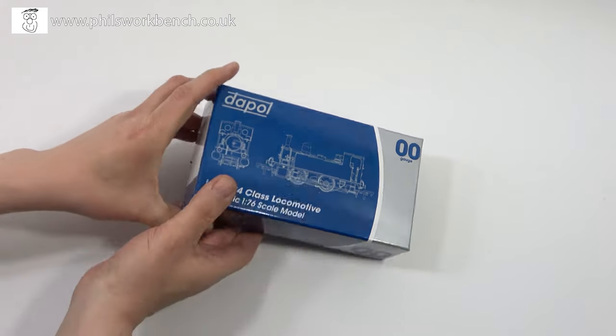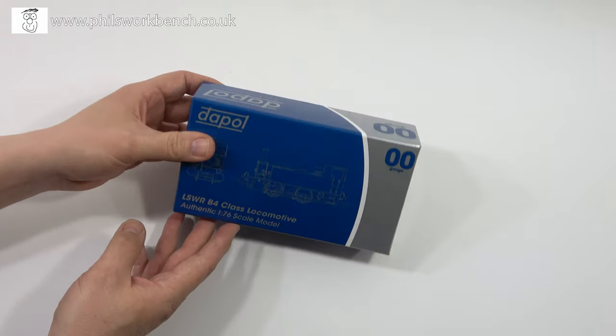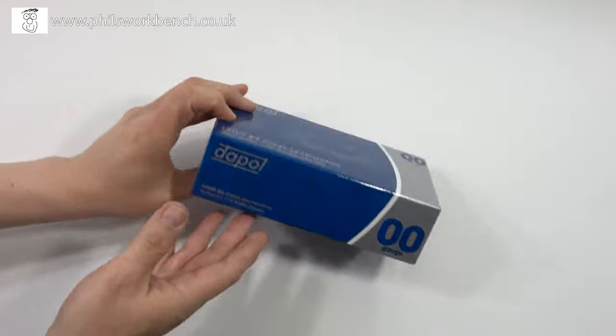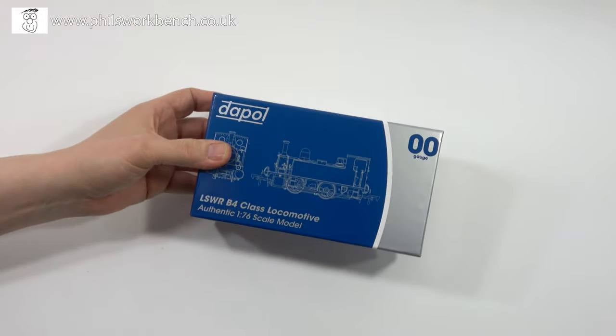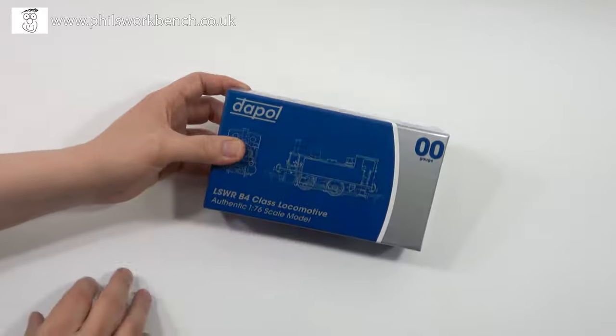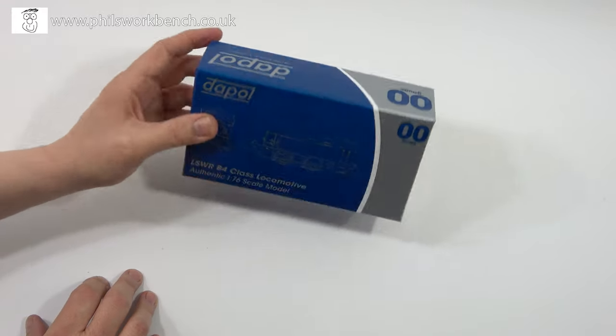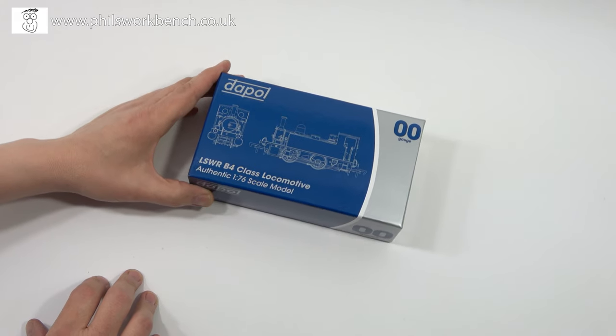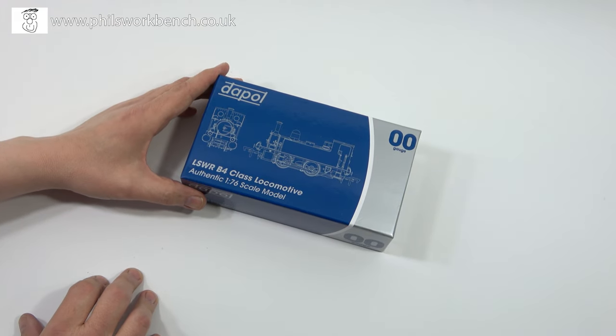Now, the B4 Tank Loco has been out for a very long while from Dapol, and I was able to buy this one very cheaply. I paid just under 80 quid from Hattons, and to be honest, it's a loco I've wanted for a while because I quite fancy it for Melbridge Dock.